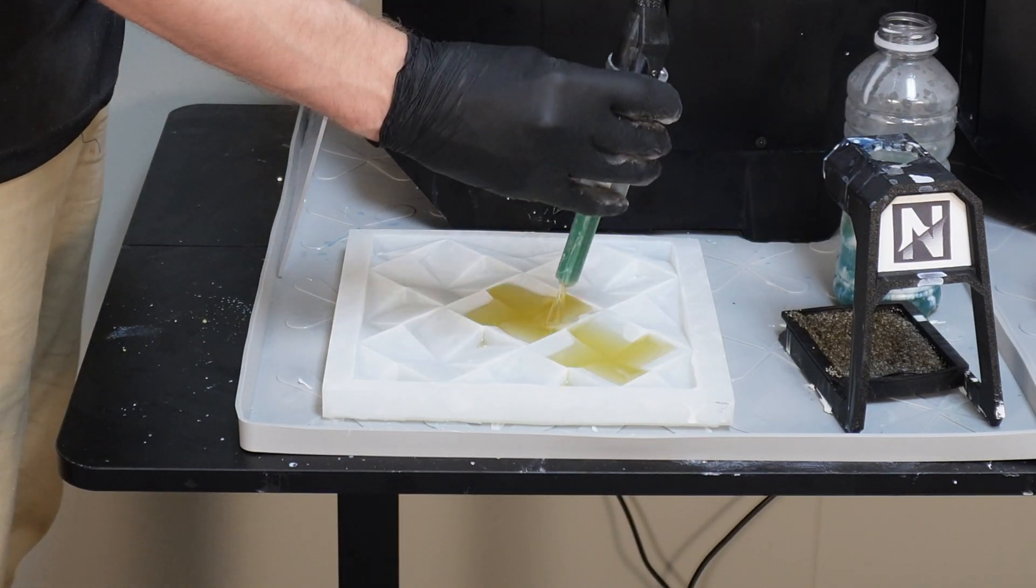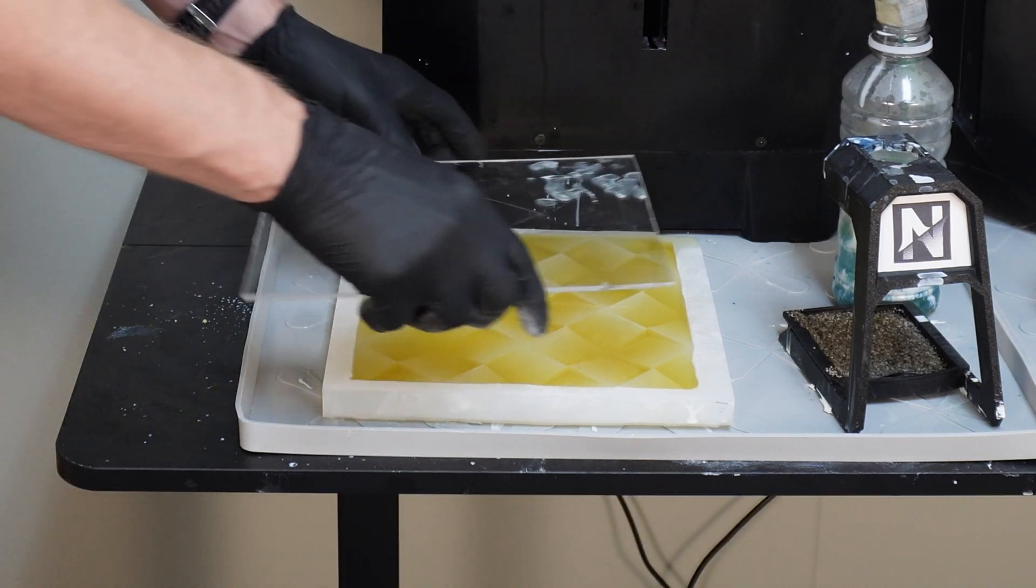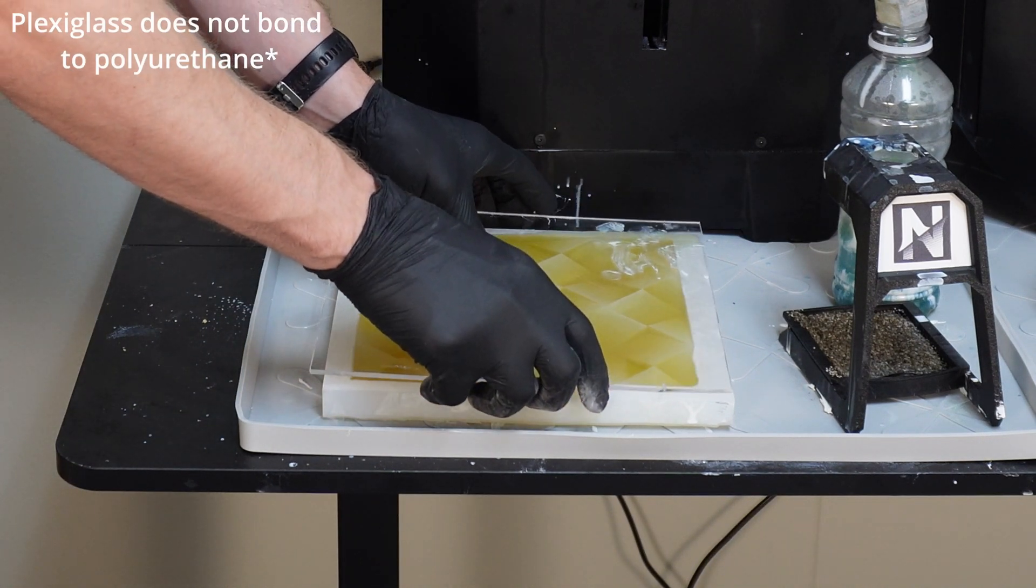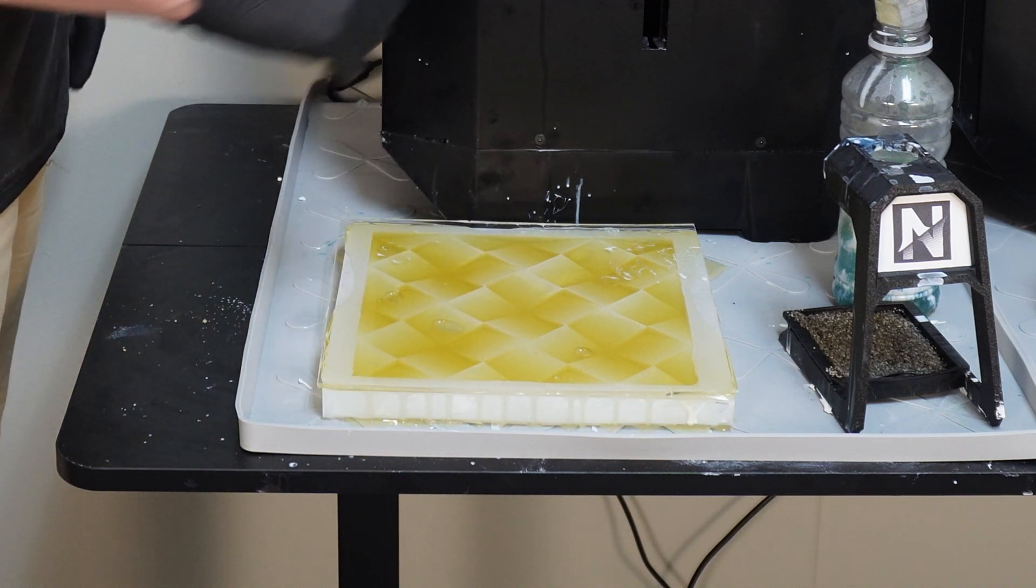We inject the polyurethane just like before, but this time I place a piece of plexiglass on top after injection. The plexiglass creates a smooth, even surface. By flexing it slightly so the center touches first, I can push out air bubbles.